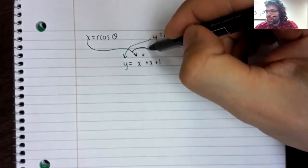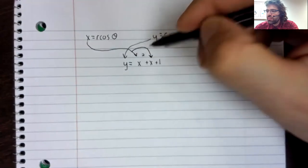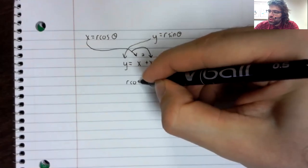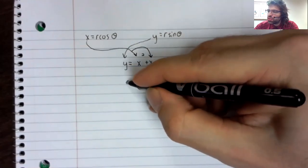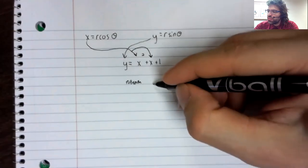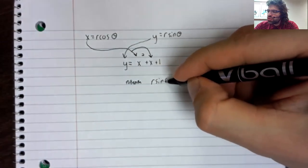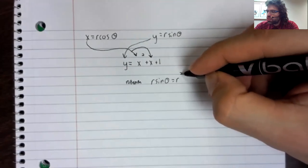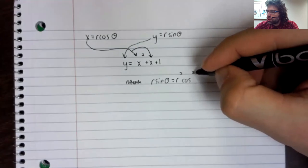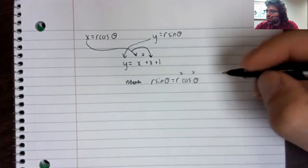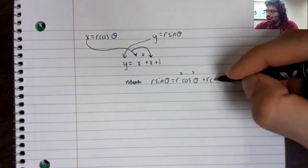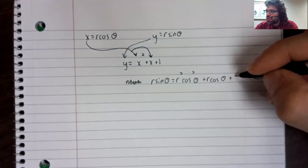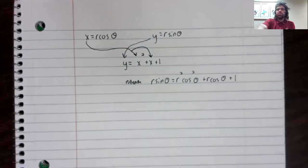it's just a matter of sticking y and x into their appropriate places. r times the sine of theta equals r squared times the cosine squared of theta, plus r times the cosine of theta, plus one.